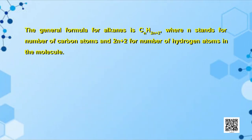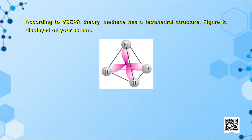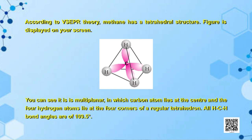These hydrocarbons are inert under normal conditions because they do not react with acids, bases, and other reagents; hence they were earlier known as paraffins. Paraffin is a Latin word where 'param' means little and 'affines' means affinity. The general formula for alkanes is CₙH₂ₙ₊₂, where n stands for number of carbon atoms. According to VSEPR theory, methane has a tetrahedral structure — it is multiplanar, with the carbon atom at the center and four hydrogen atoms at the four corners of a regular tetrahedron. All H-C-H bond angles are 109.5 degrees.